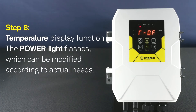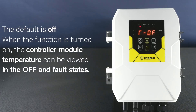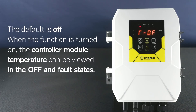Step 8: Temperature display function. The power light flashes, which can be modified according to actual needs. The default is off. When the function is turned on, the controller module temperature can be viewed in the off and fault state.